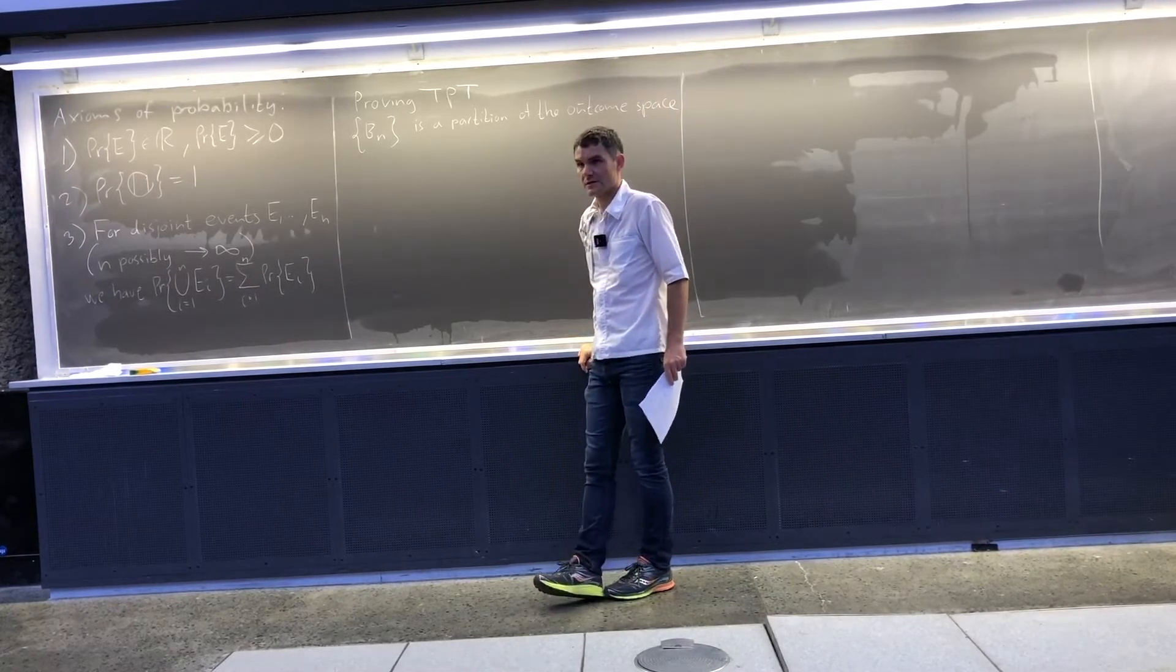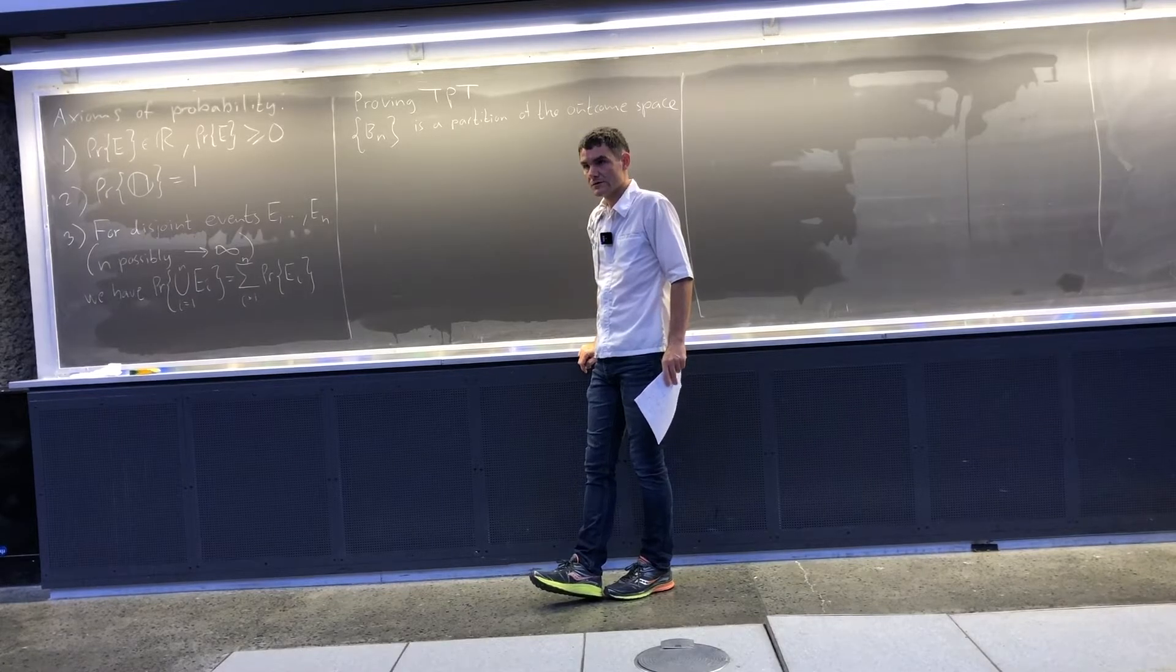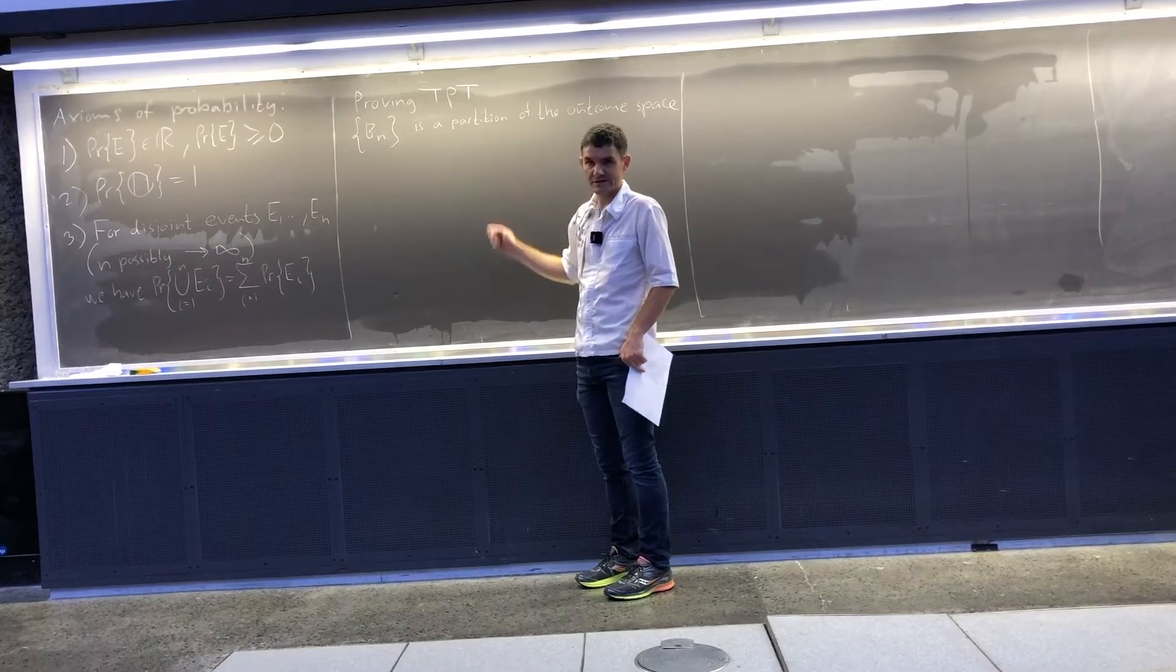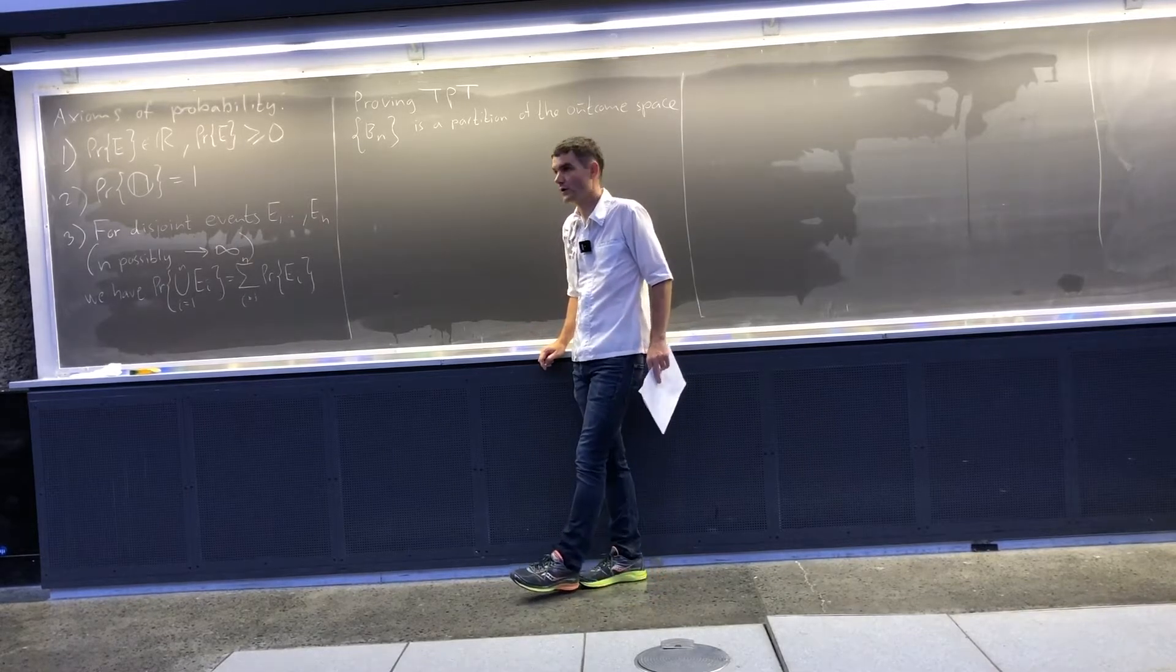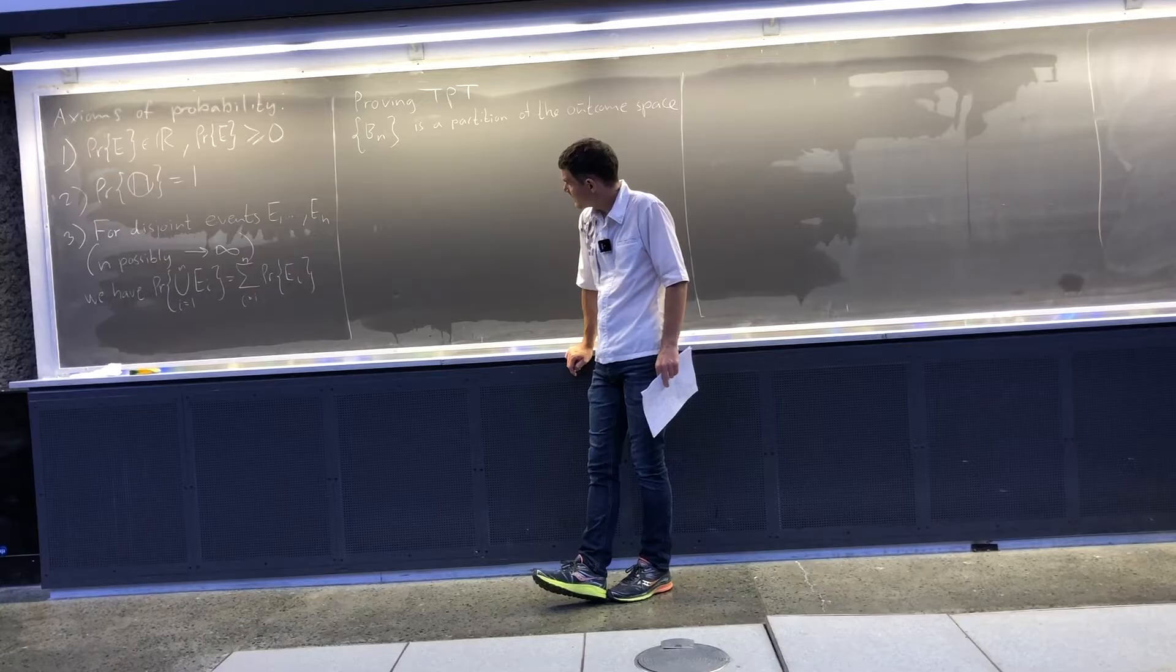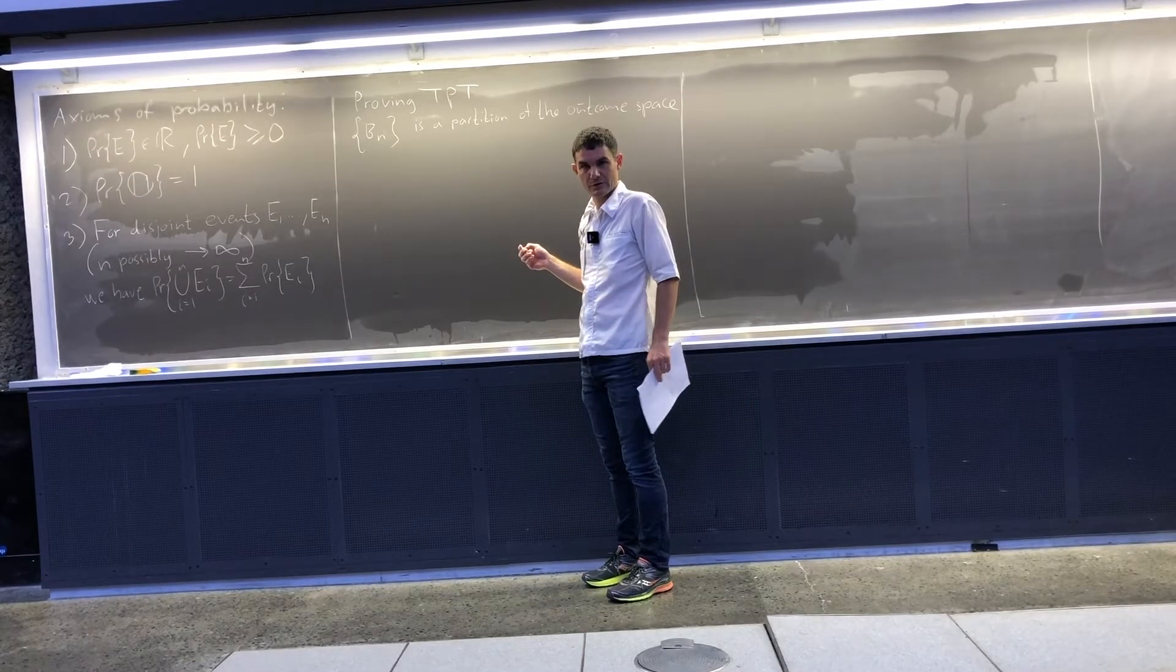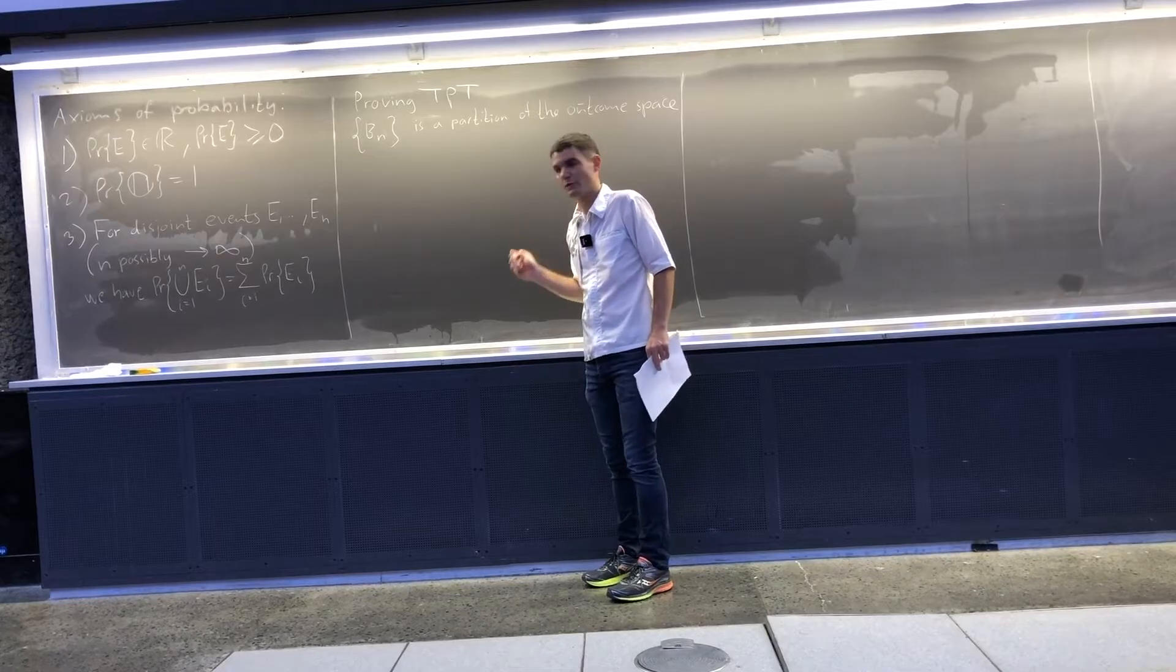What that means is that somehow whatever happens is going to be part of one of these events Bn. Bn cover the whole outcome space. And being a partition also means that those elements cannot overlap. Anything that happens is only part of one of these events.